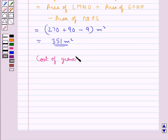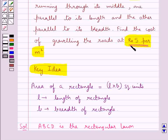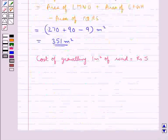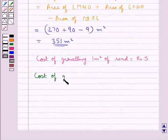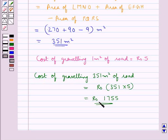The cost of graveling 1 meter square of road is Rs. 5, as given in the question. So the cost of graveling 351 meter square of road is equal to Rs. 351 into 5, which equals Rs. 1,755. So the cost of graveling the roads is Rs. 1,755. This is our final answer.